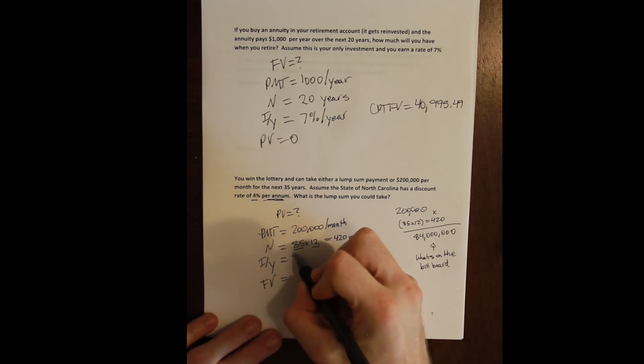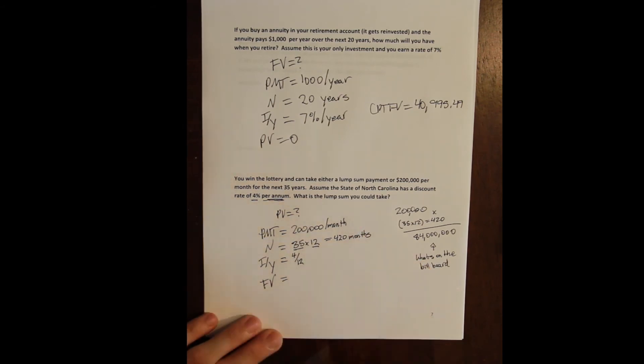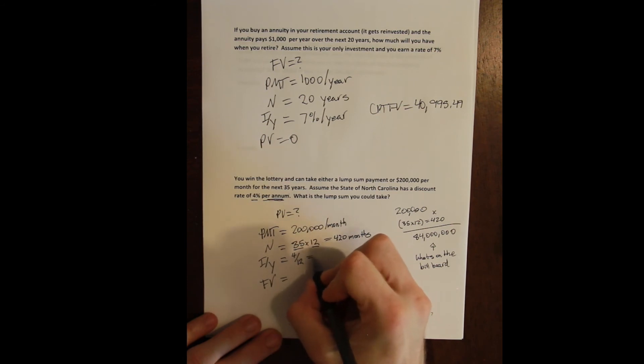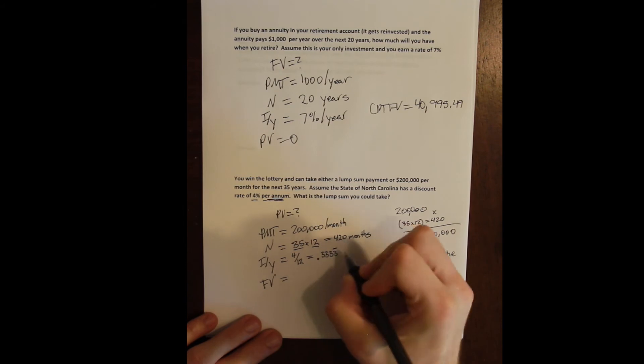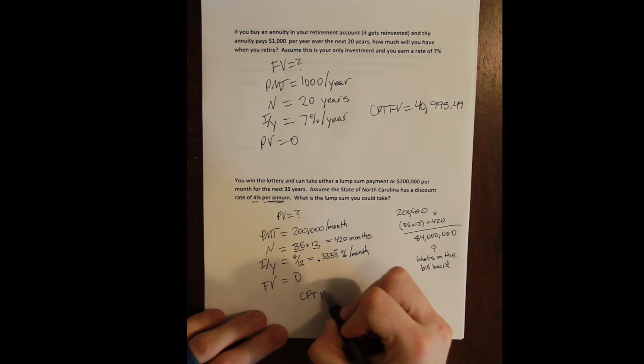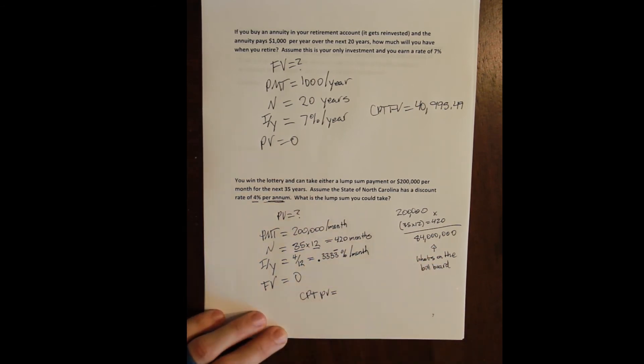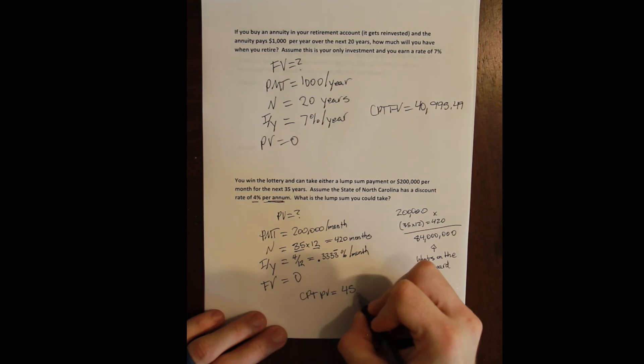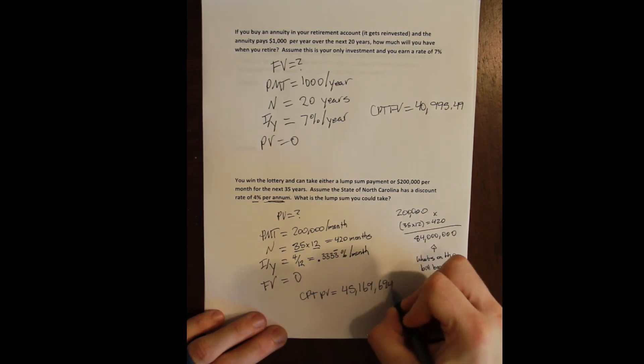So we convert 4% per year to a monthly rate by dividing by the number of months in a year to get 0.3333% per month. Future value here is zero because we don't get any lump sum at the end. We're talking about taking a lump sum at the beginning.